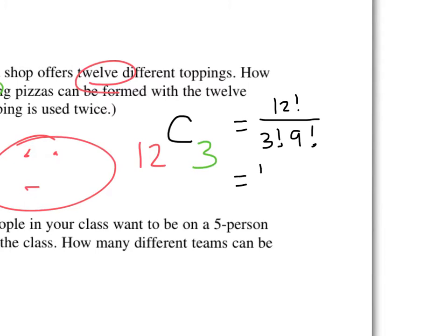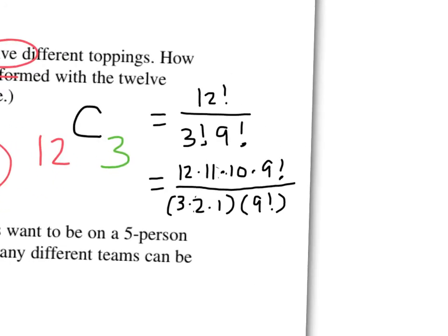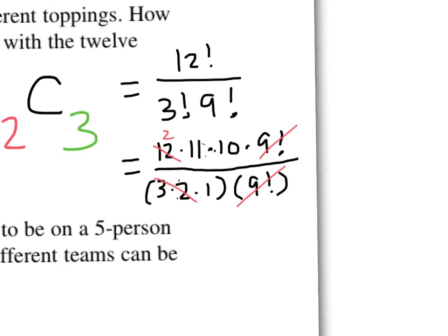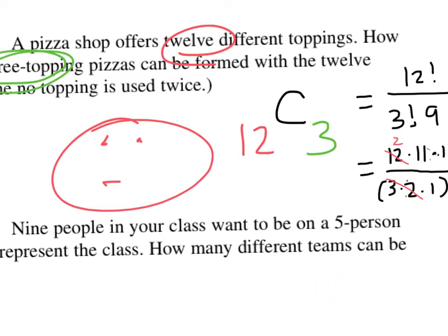And I'm going to put three factorial here and nine factorial here. Now, I can go ahead and 12 times 11 times 10 times nine factorial, all over, let me expand the three and not expand the nine. And the nine factorial is there. So as we recall, the nine factorial drops out. And then this is a six, and it drops that out to a two. So now all we have to do is multiply the two times 11 times 10. So in the end, I have 220 different pizzas to choose from.